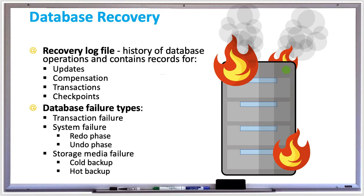There are three failure types. Transaction failure is when the data rolls back to the original value if there are logical errors, deadlocks, hardware failures, or even if the database runs out of disk space. If there is a transaction failure, the database concurrency system tells the recovery system to roll back the transaction by reading the recovery log file starting from the end of the file, which contains the latest records.